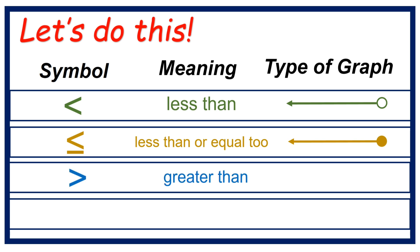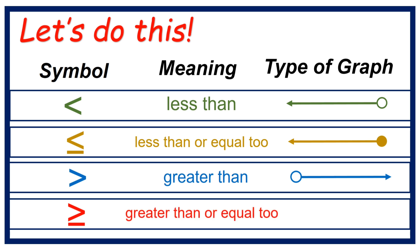Next symbol — its meaning is greater than. Type of graph: open circle, arrow going to the right, just like the symbol. And last but not least, greater than or equal to. The type of graph: closed circle, and arrow going to the right.